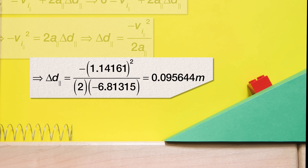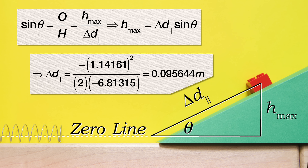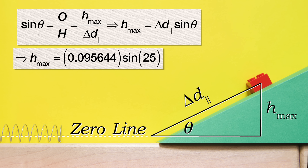Now we can find the maximum height using sine of theta equals opposite over hypotenuse. Opposite theta is the maximum height and the hypotenuse is the displacement in the parallel direction. Multiply by the displacement in the parallel direction to get the height maximum equals the displacement in the parallel direction times the sine of the incline angle, or 0.095644 times the sine of 25 degrees, which is 0.040421 meters.